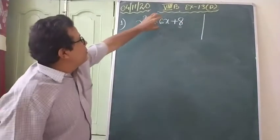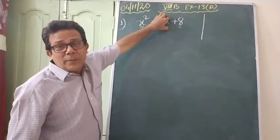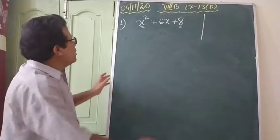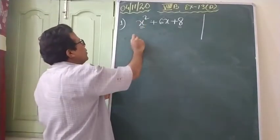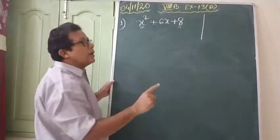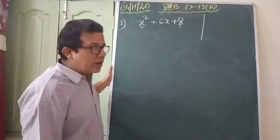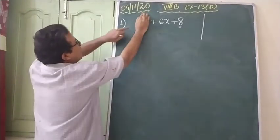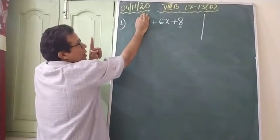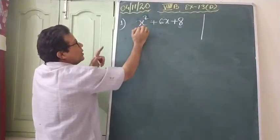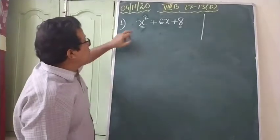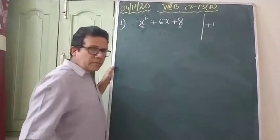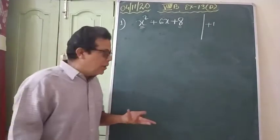Now, how to break the middle one? You have to break the middle term. What are the rules of breaking it? First you come to the highest power term and see its numerical coefficient. How to find it out? You just cover the variable part. For the highest power term, what is there on this side? Nothing, means one. So the coefficient of x² is plus one.